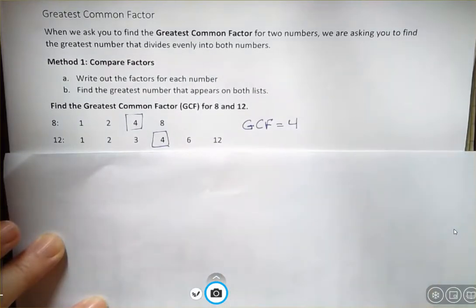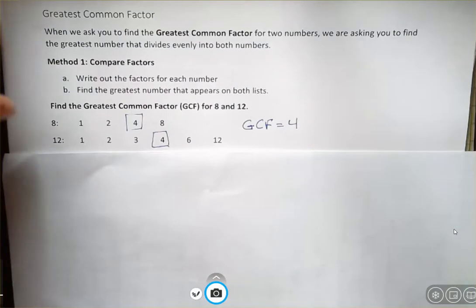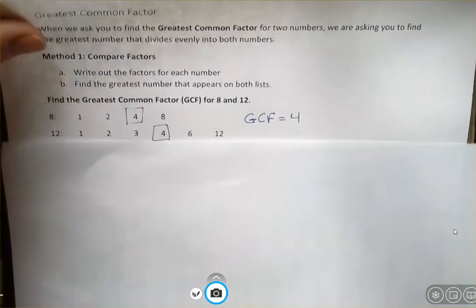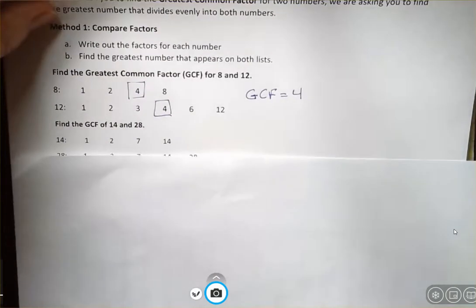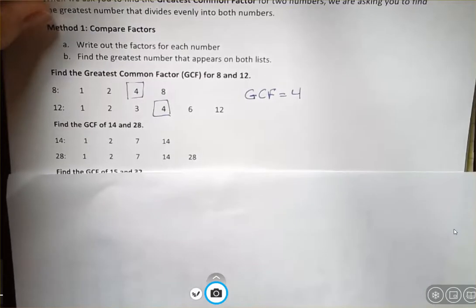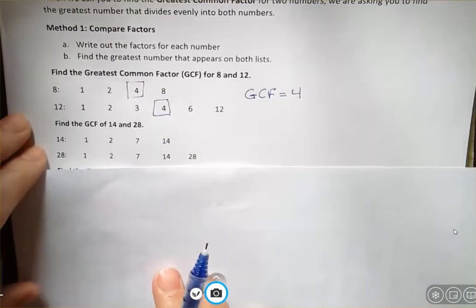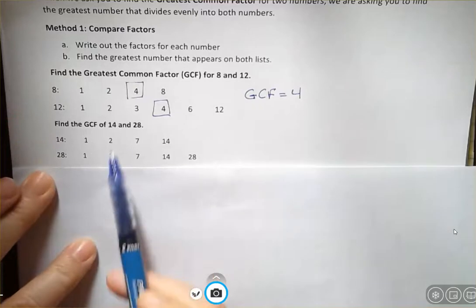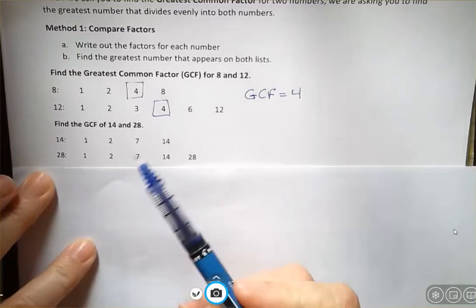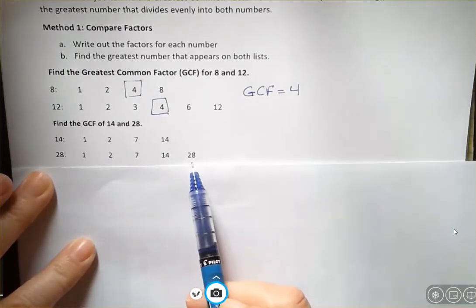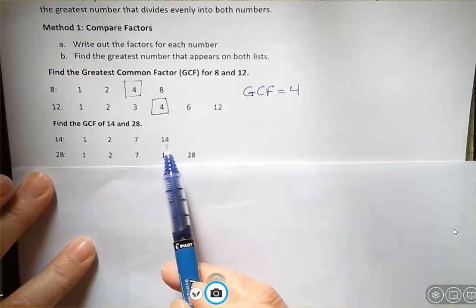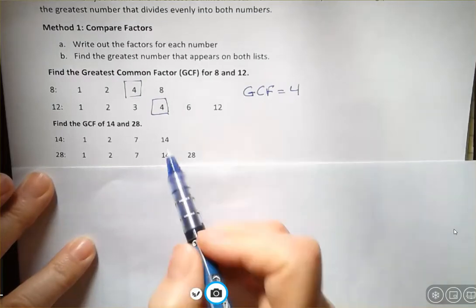We're just listing out the factors and then seeing which ones they have in common. So for the next one, I have 14 and 28. You could list out all the factors of 14 and all the factors of 28. And what you can see is they have all these factors in common. In fact, 14, because it divides evenly into 28 and it divides evenly into itself, that's our GCF.